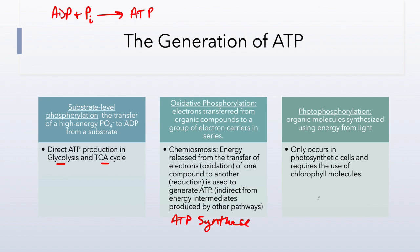In photophosphorylation, light energy is used to excite electrons in an electron transport chain. This only occurs in photosynthetic cells and requires chlorophyll molecules and structures known as photosystems. So we have three basic forms of ATP generation: substrate level phosphorylation during glycolysis and the Krebs cycle; oxidative phosphorylation, which can occur under aerobic or anaerobic conditions and is indirect production through ATP synthase; and photophosphorylation, another form of indirect ATP production.